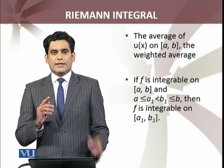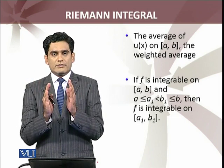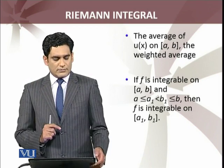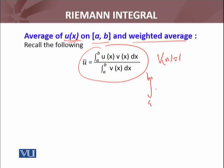The result I have explained: if f is integrable on a larger closed interval, then f is integrable on a smaller interval. The average value of u(x), a real valued function on the closed interval [a, b], and weighted average we have from the previous result. We define u bar equals integral from a to b of u(x)v(x) dx. If we take v(x) equals 1, it is integral a to b of v(x) dx, which equals 1 dx.